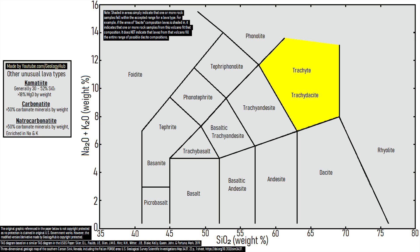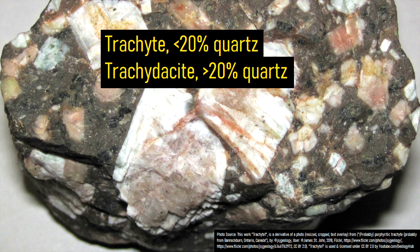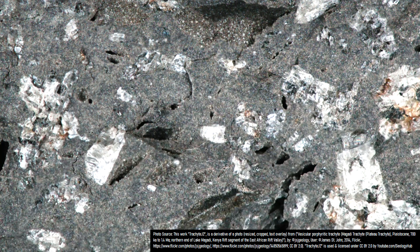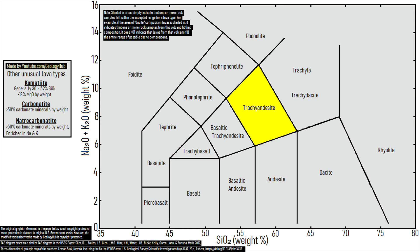Trachyte and trachydacite are two silica and alkali-rich rock types which have one difference: trachyte has less than 20% by weight quartz, while trachydacite has more than 20% by weight quartz. Both of these rock types have a light gray color and contain clusters of larger crystals surrounded by finely grained material that looks somewhat like powder. Trachyandesite is somewhat similar, except it has close to an even distribution of white and orange to pink tinted feldspar crystals.